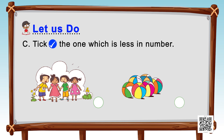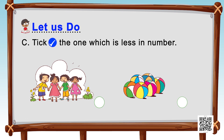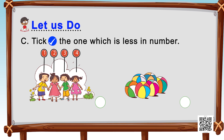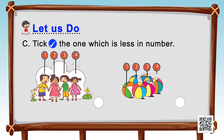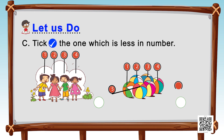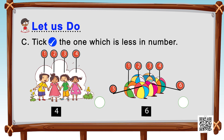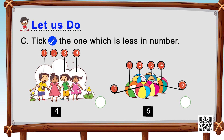Next is a bunch of friends and balls. Let's count and take the one which is less in number. The kids: one, two, three, four — we have four kids. The balls: one, two, three, four, five, six — we have six balls. Which is less in number? Yes, it is four kids, so we put a tick there.